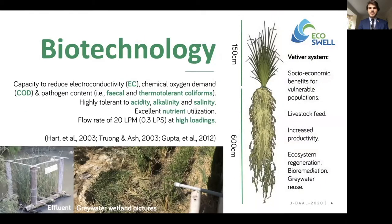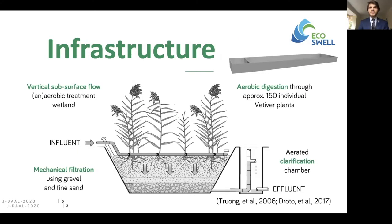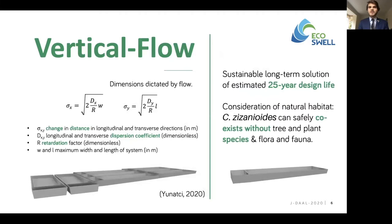We are working with Vetiver Biotechnology because of their capacity to reduce electroconductivity, COD, and pathogen content, and their ability to survive in extremely adverse circumstances. Vetiver also has excellent nutrient utilization and absorbs high amounts of carbon. Vetiver is an example of green infrastructure providing ecosystem-based adaptation services. The infrastructure includes a vertical subsurface flow wetland in which the influent is digested anaerobically by approximately 150 individual vetiver plants, aerated by microbes in their rhizospheres, while simultaneously being mechanically filtered through fine sand and gravel. The wetland cells were sized according to the dispersion coefficients computed from the flow properties of the influent wastewater, the retardation factor of the soil bed, and the maximum dimensions of the system.